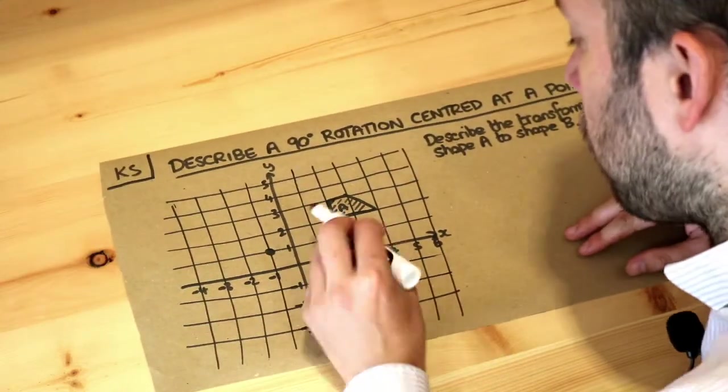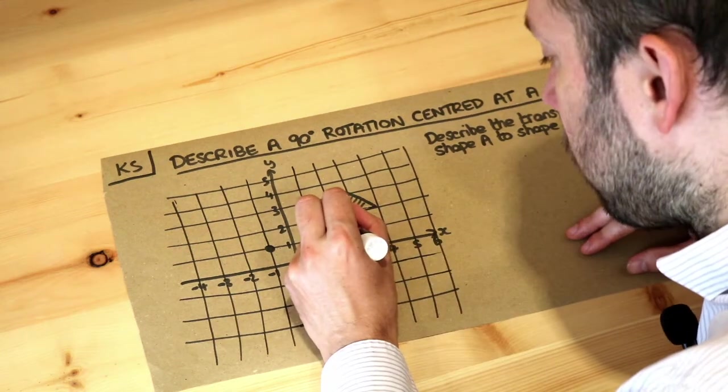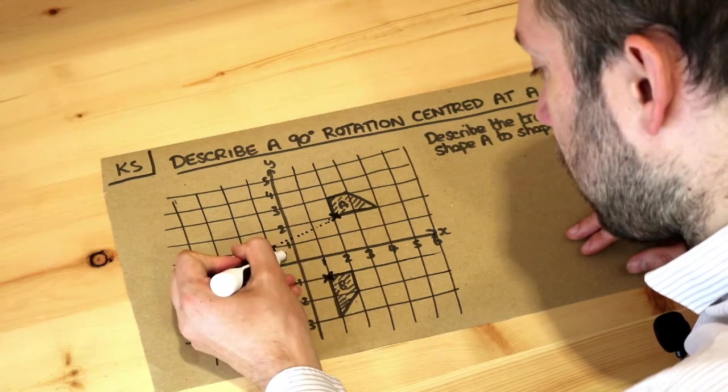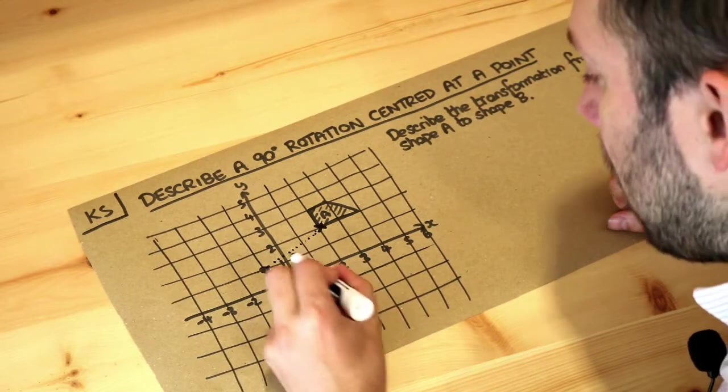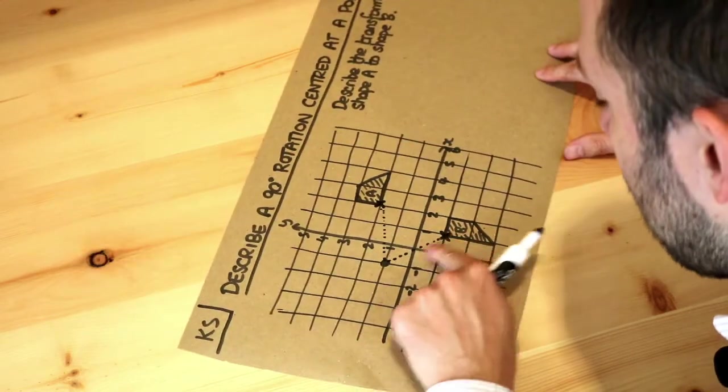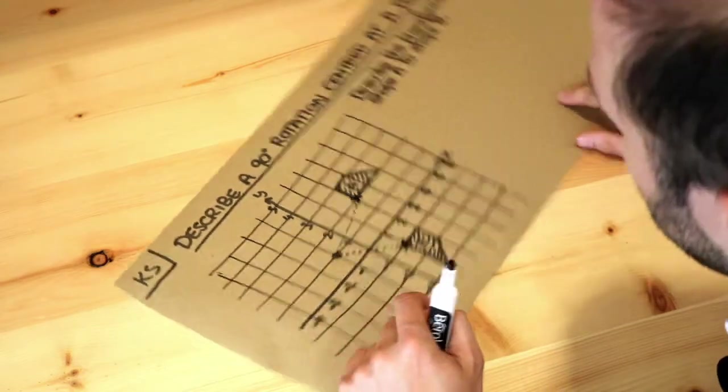Then what you do is you draw lines from this point and the equivalent point on the other shape to your center rotation. Let's just use dotted lines. Now we then look at what that angle is, so what is this angle here? Well this is not a right angle, you can see a right angle would be like that.